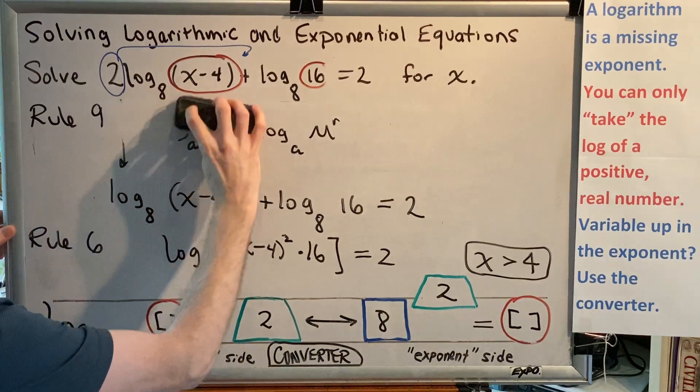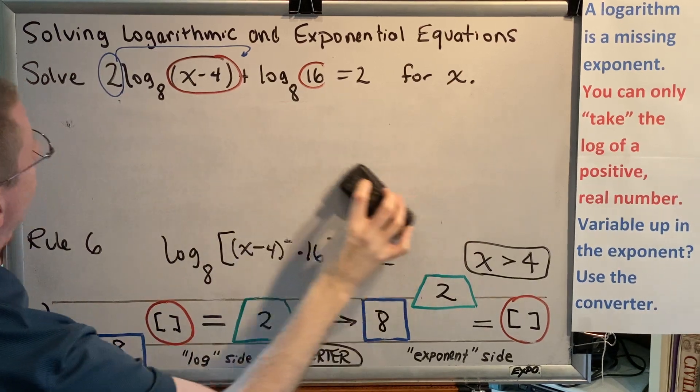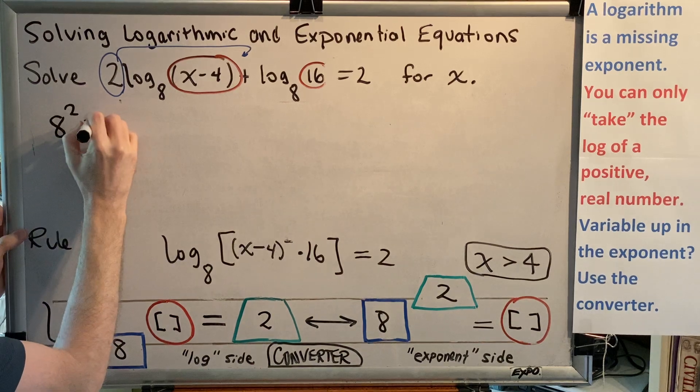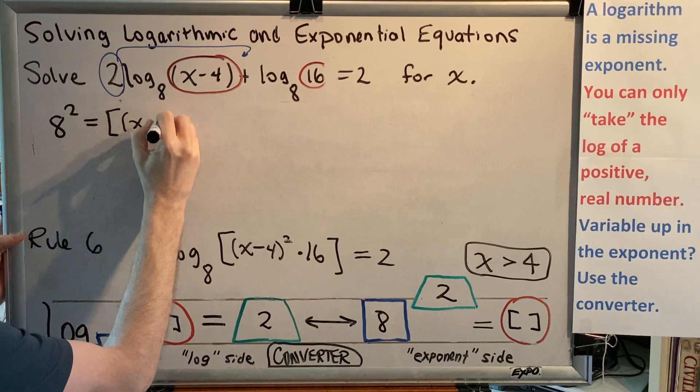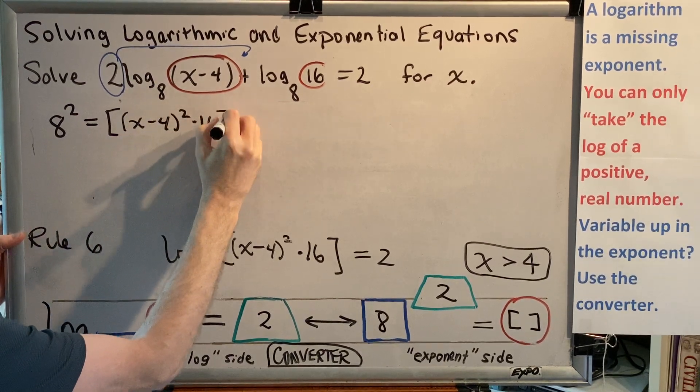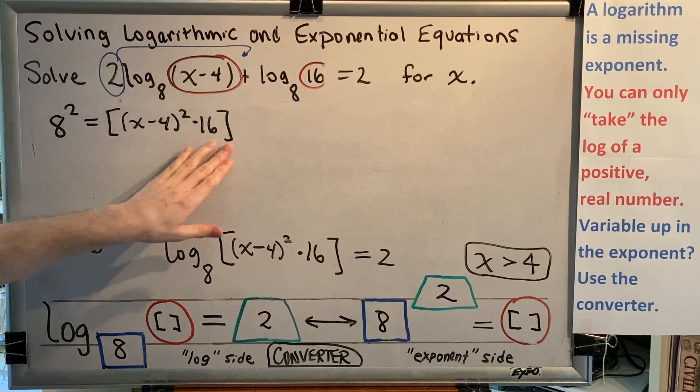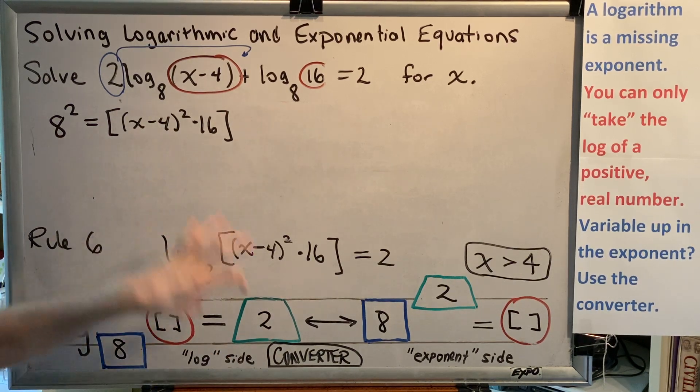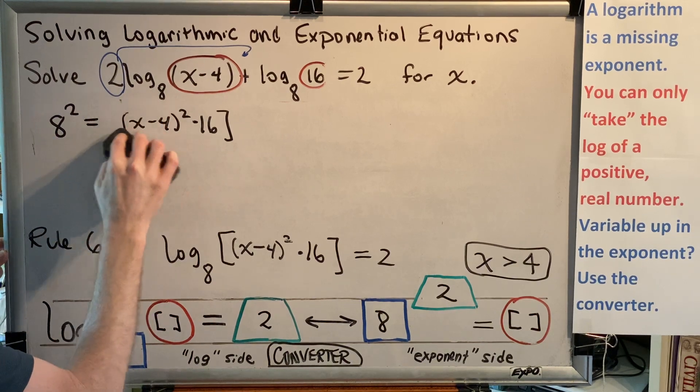So now we have this 8 squared equals everything in brackets. And of course, everything in brackets would be (x minus 4) squared times 16. And interestingly, once it's written in this form, we really don't need the brackets anymore. The brackets were only needed here because that was our way of indicating that the whole thing was the argument of our log. But now that we just have a statement without log, these brackets are no longer necessary. So I'm going to go ahead and erase those.